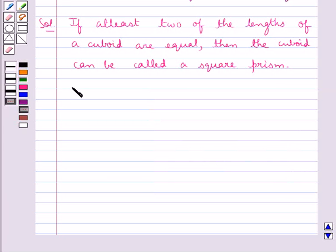So we can say that a square prism is a special case of the cuboid.